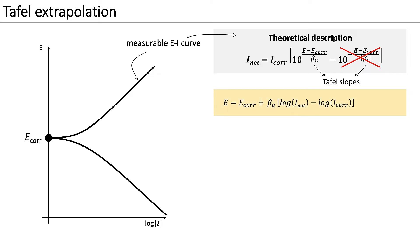If we now rewrite the simplified equation and take the logarithm, we can see that far from the corrosion potential, the curve becomes linear in the semi-logarithmic scale. The anodic Tafel slope, beta A, is the slope of this linear region of the curve.